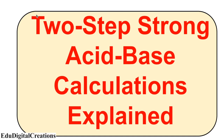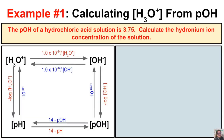Hey you guys, this is Mr. Millings and in this video we are going to learn how to do some two-step strong acid-base calculations. Let's jump right in and take a look at the first example. The first example says that the pOH of a hydrochloric acid solution is 3.75, and we need to calculate the hydronium ion concentration in moles per liter.